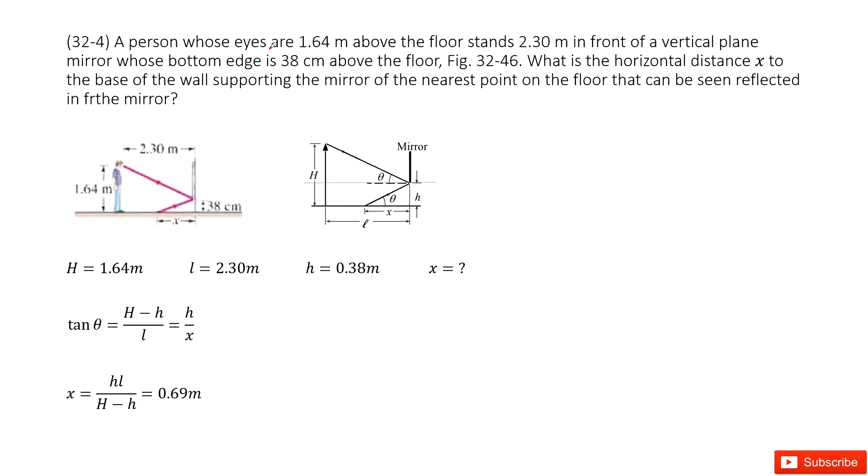We can see a person whose eyes are 1.84 meter above the floor stands 2.3 meter in front of a vertical plane mirror whose bottom edge is 0.83 meter above the floor. What is the horizontal distance x to the base of the wall supporting the mirror?